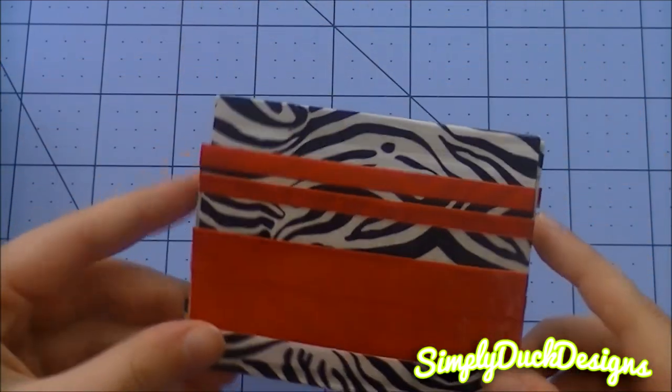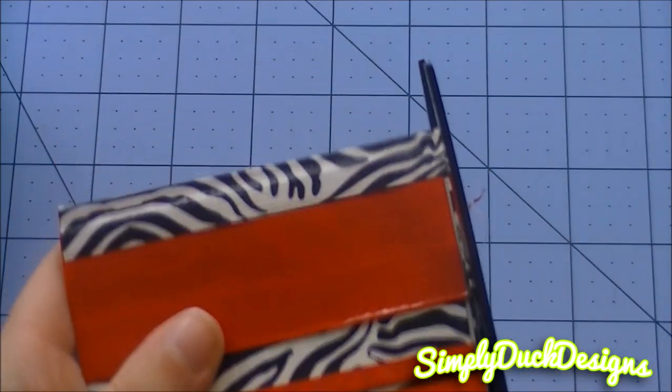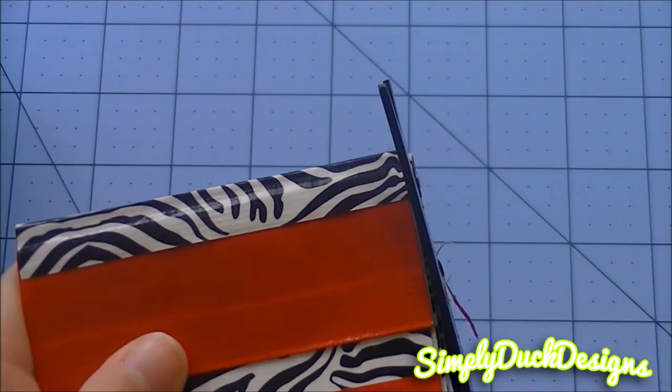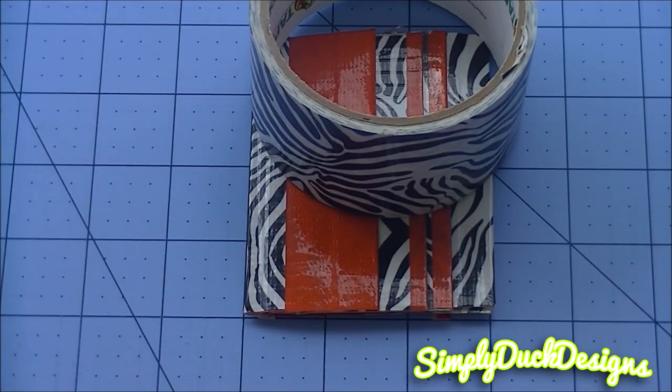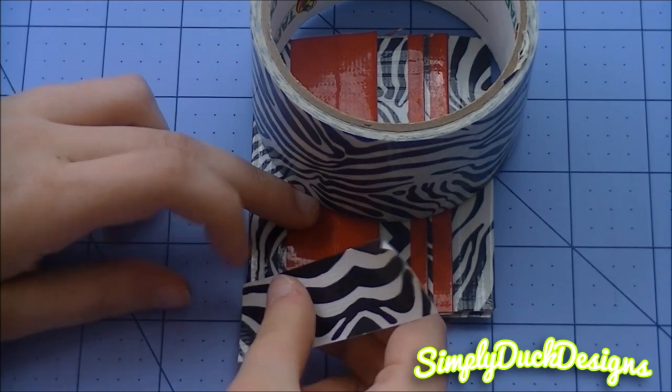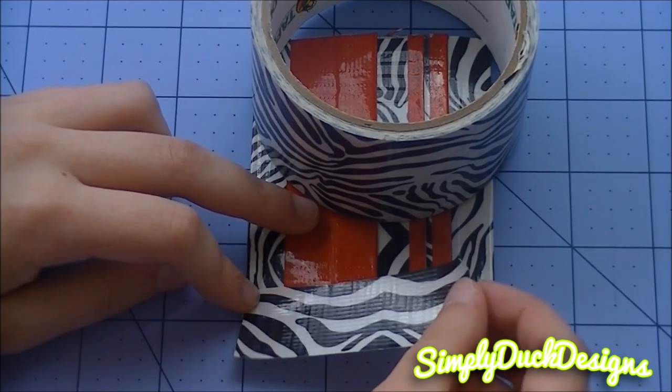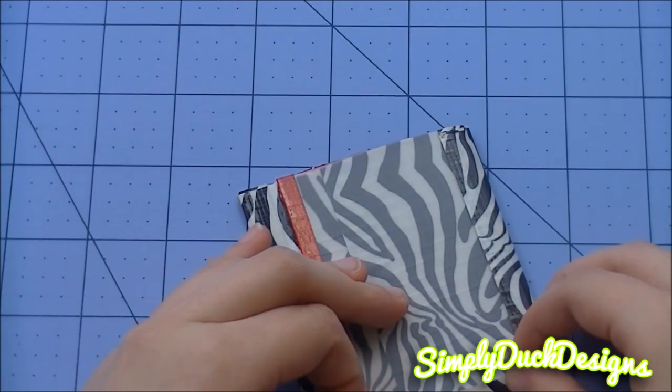Just make sure that all your edges are nice and straight and clean. So now I'm doing the exact same thing, using a roll of tape to hold it down. And I'm taking one of my strips that were 3 inches long. And I'm just going to use that to seal up these sides. And I'm going to fold that over.